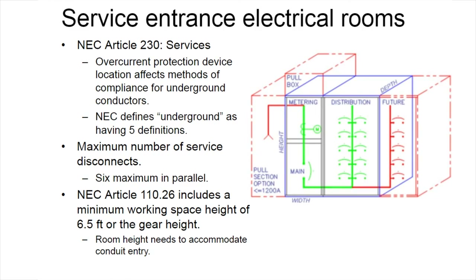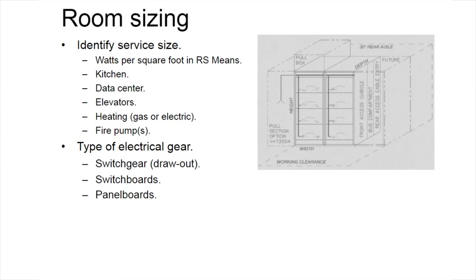NEC 110.26 also identifies the minimum working height — six feet, six and a half feet, or higher — which relates back to architectural coordination. The height of the room must accommodate the gear, people walking in the room, HVAC structure, and lighting. Once the electrical room is located, protected from flooding, and coordinated with all disciplines, we need to determine how large to size it. Early in a project during programming or schematic design, it can be difficult to know how large the room needs to be before major decisions are made.